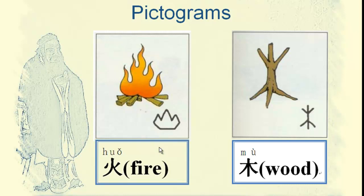On this page we have two more characters, also 象形字. The first one is fire — 火, 火. It's also very like the picture. The first part represents the branches of a tree, and the lower part represents the roots of the tree.